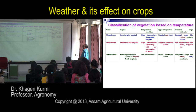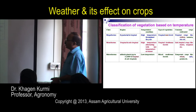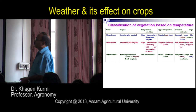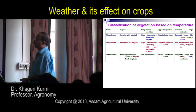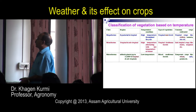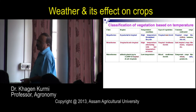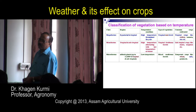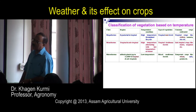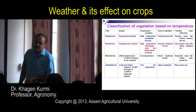The third group is Microtherms — generally low temperature regions. At altitudes up to 12,000 feet in tropical and subtropical regions, you get this type of microtherm climate with low temperature, mixed with coniferous forests. Temperate crops like wheat, potato, oats — winter season crops that require low temperature — can be grown very easily here.